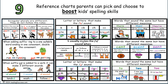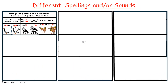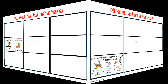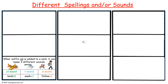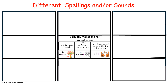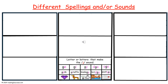Welcome, parents! Welcome to nine reference charts that parents can pick and choose to boost kids' spelling skills. They are: irregular plurals; when to double the consonant to add suffix -ing; suffix -ed can make three sounds; letter or letters that make the K sound; when S usually makes the Z sound; letter or letters that make the J sound.